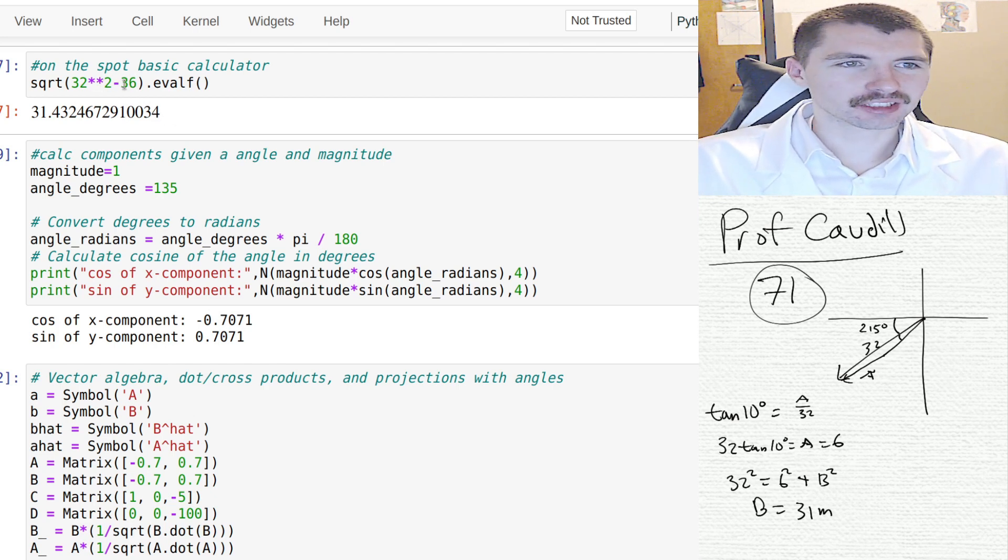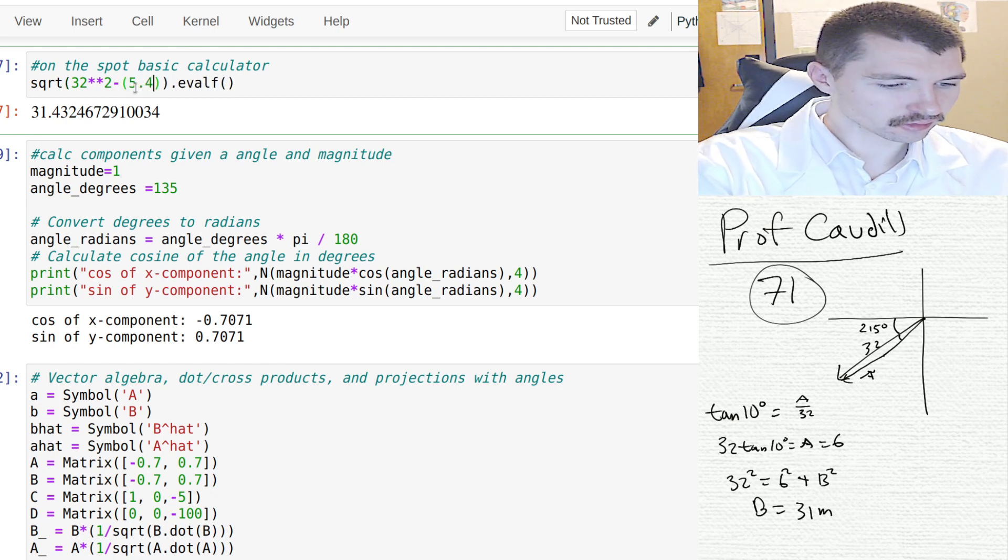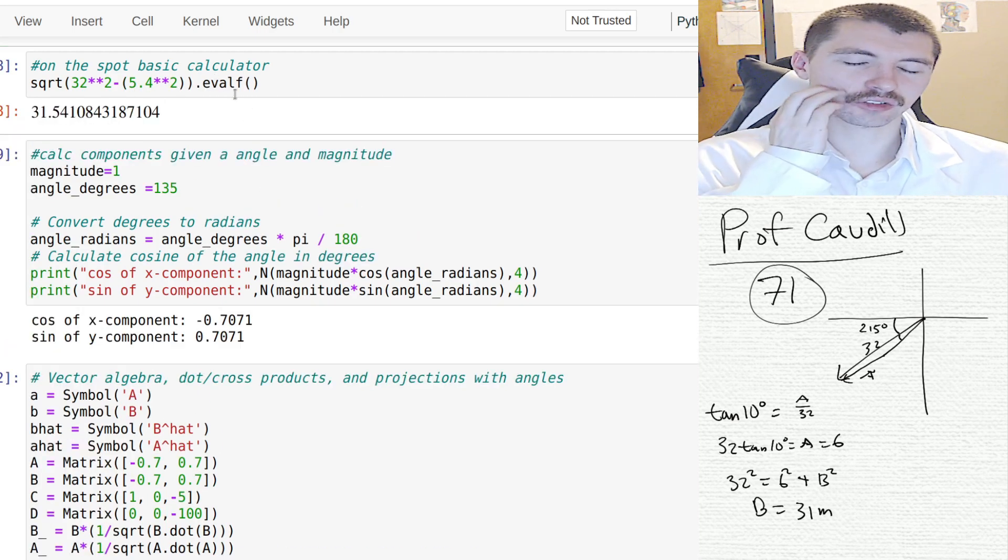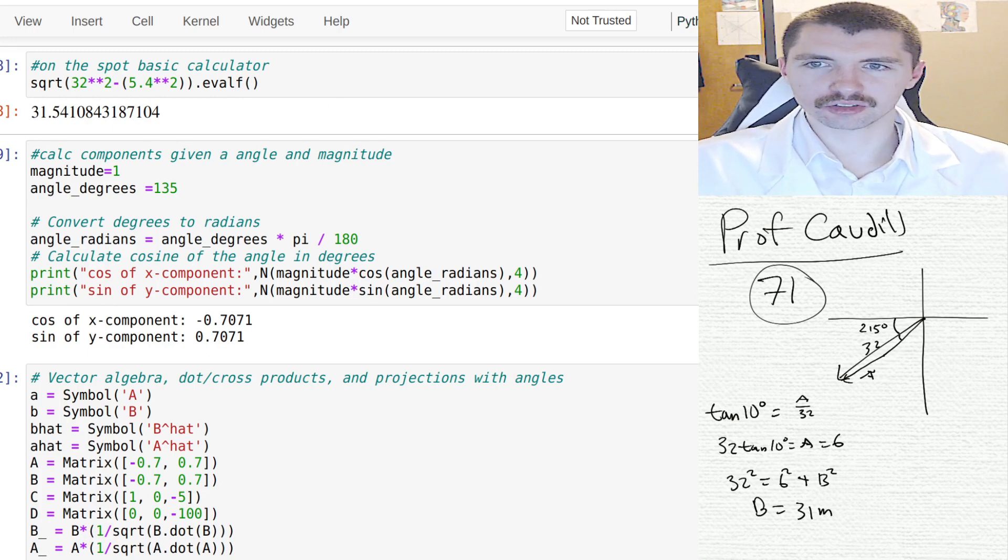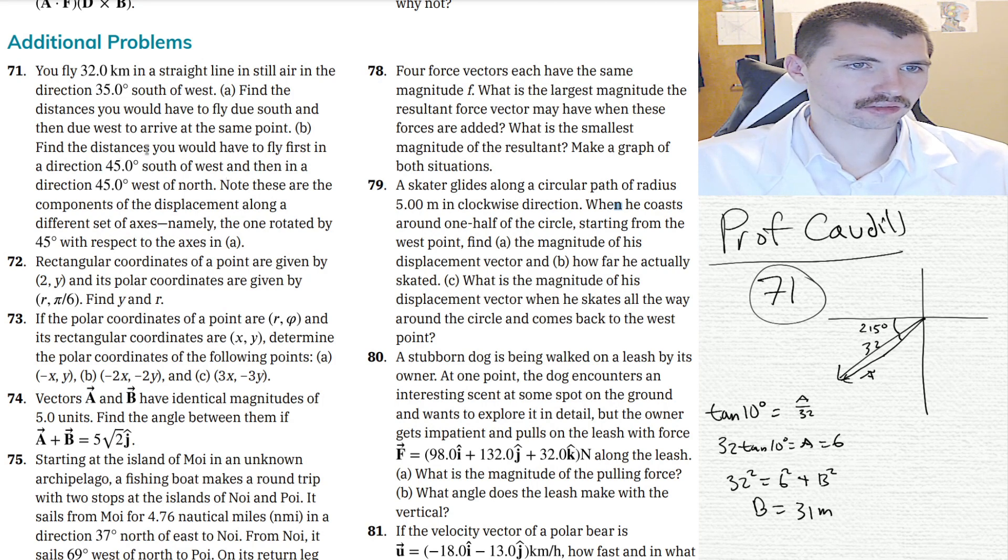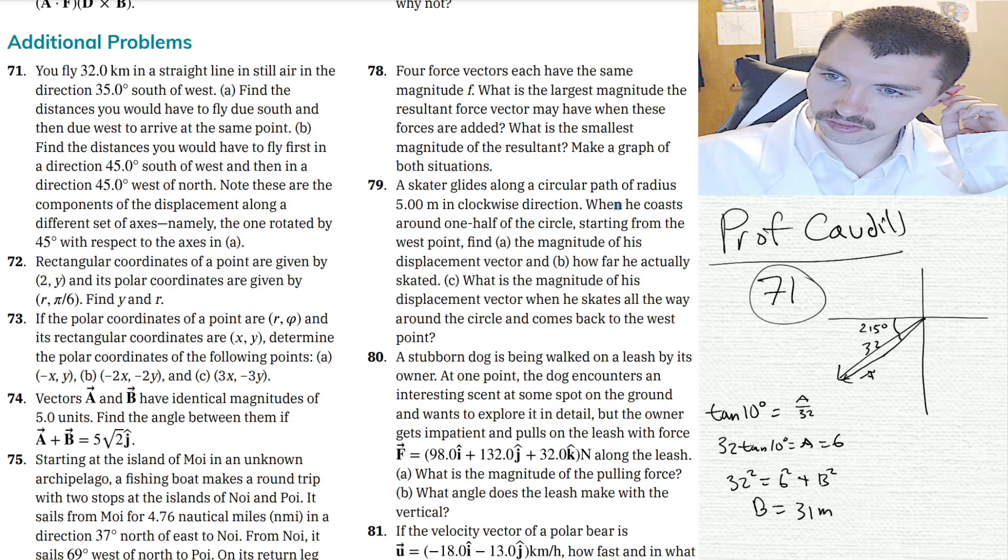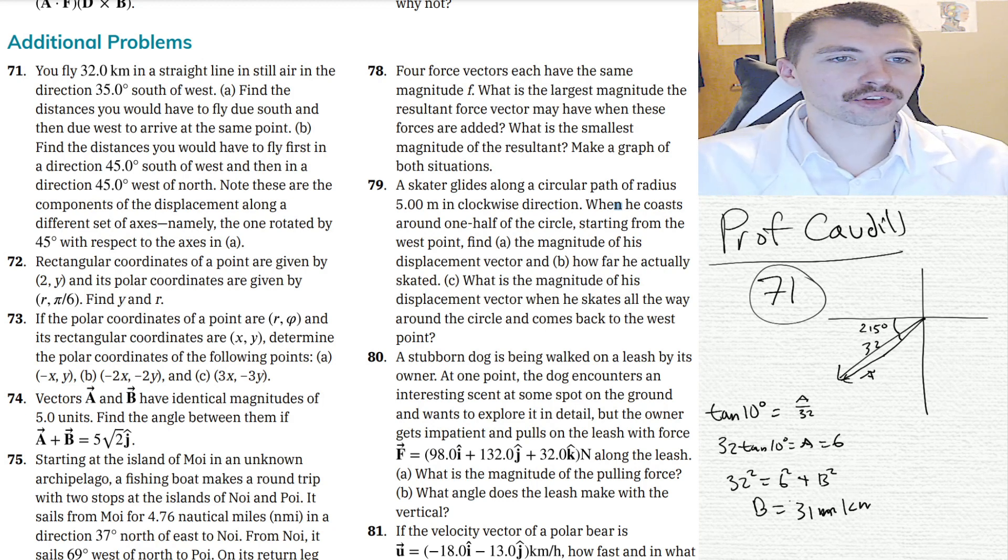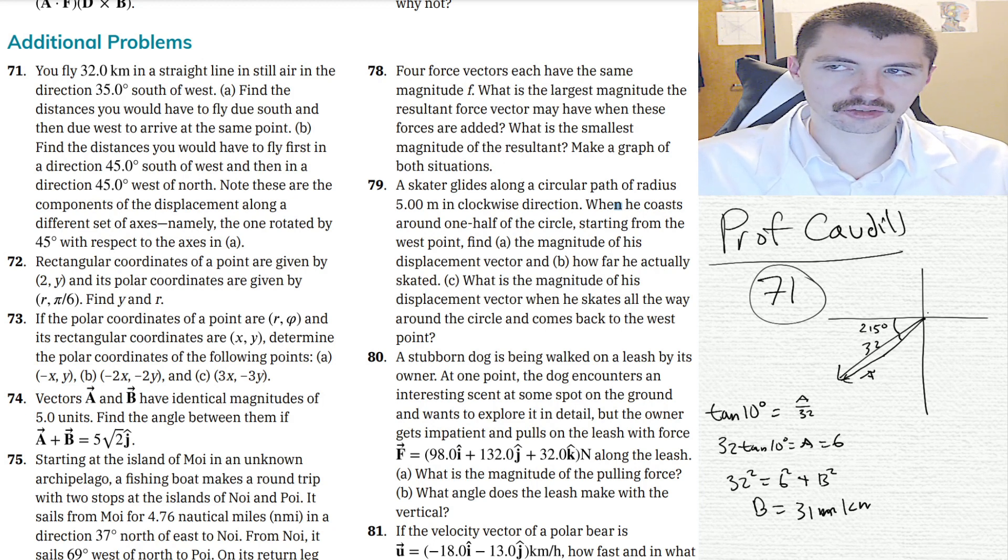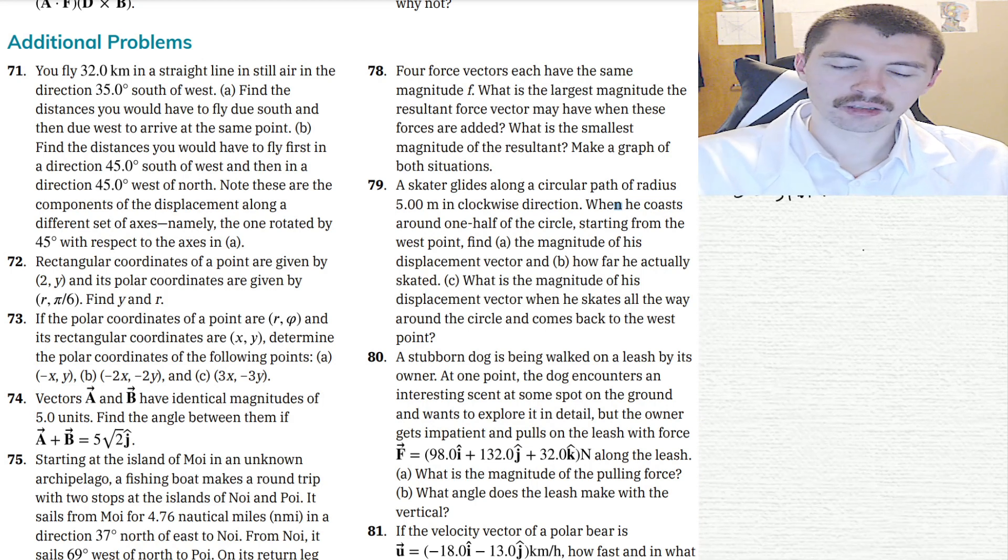If I want to get more accurate, I guess we could do 5.4 squared. The numbers are kind of close. So he has to fly 31 kilometers south of west, and then 6 kilometers west of north. Yeah, I think that's what they are asking. All right, next one.